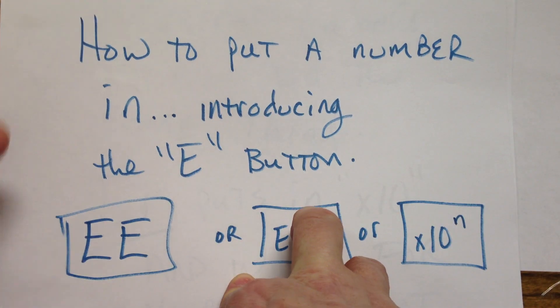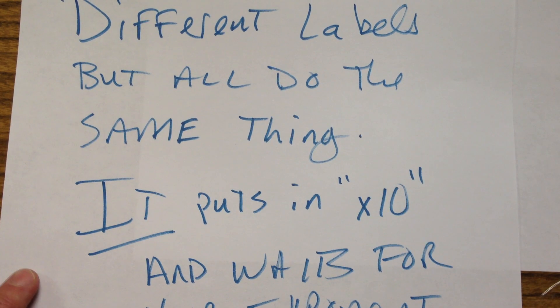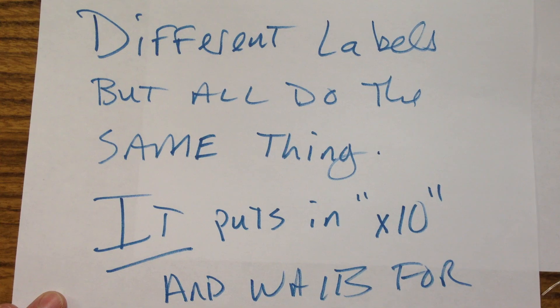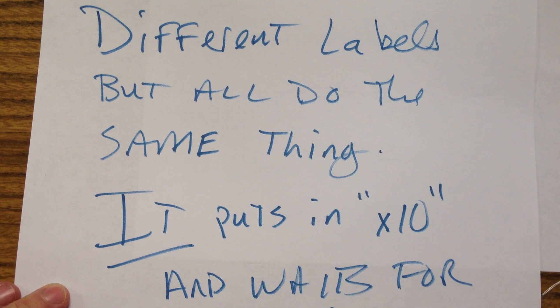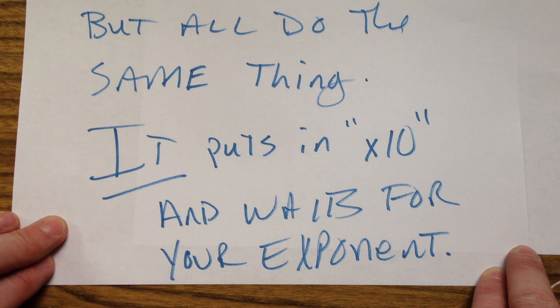If you can't find it, I'm going to probably pause the video here. Make sure everyone in the room has found that button on their calculator. Those are all different labels. But, they all do exactly the same thing. It takes the number that you just inputted and then it puts in a times 10. Whether it shows it or not, it puts it in. And then it waits for your exponent. It waits for your exponent.